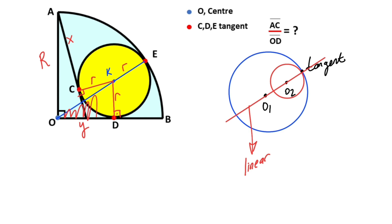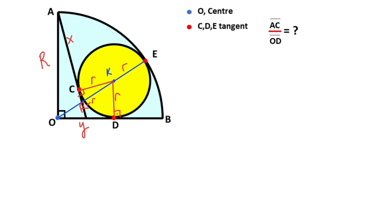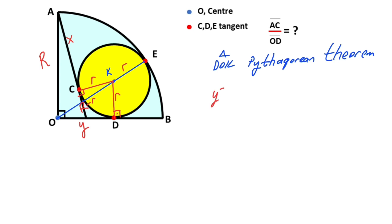If you focus on triangle ODK, the hypotenuse must equal uppercase R minus lowercase r. Applying the Pythagorean theorem to triangle ODK gives: y squared plus r squared equals (R minus r) whole squared. This is the first equation. Now, if you draw a perpendicular line onto line OA and call that point L, we get a rectangle.